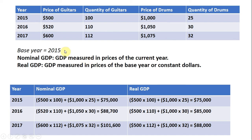We are told that the base year is 2015, and given this information, we want to calculate nominal GDP. Nominal GDP is just GDP measured in the prices of the current year.